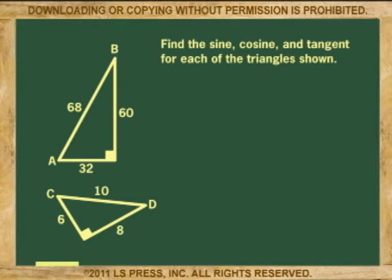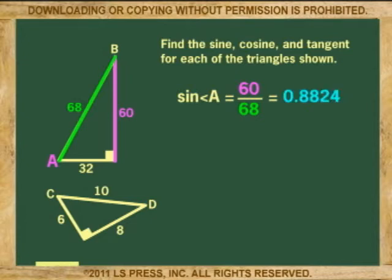We begin with angle A. The sine of angle A is the opposite side, 60, over the hypotenuse, 68. 60 divided by 68 is 0.8824.